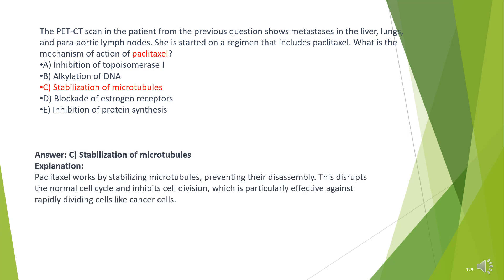The answer is C. Stabilization of microtubules. Paclitaxel works by stabilizing microtubules, preventing their disassembly. This disrupts the normal cell cycle and inhibits cell division, which is particularly effective against rapidly dividing cells like cancer cells.